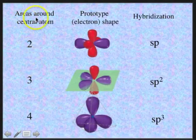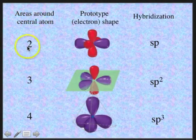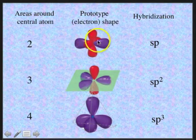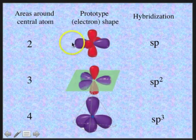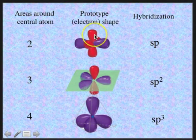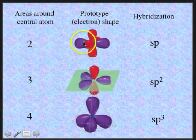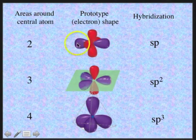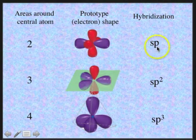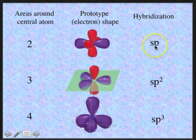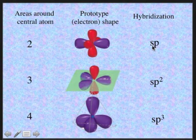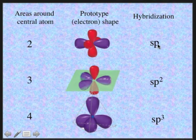So just to review, if we have two areas of electrons around the central atom, then we have a linear prototype shape. You can think about two balloons tied together forming a linear shape. And we have two unhybridized p orbitals orthogonal to the hybridized orbitals. The two linear hybridized orbitals are called sp hybridized orbitals, formed when an s orbital and a p orbital combine to form two new energetically equivalent sp hybridized orbitals.